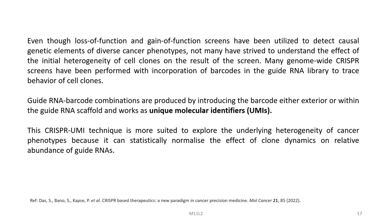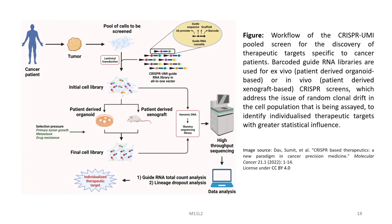Although loss-of-function and gain-of-function screens have been utilized to detect causal genetic elements of diverse cancer phenotypes, not many have studied the effect of initial heterogeneity of cell clones on screen results. Many genome-wide CRISPR schemes incorporate barcodes in the guide RNA library to trace behavior of cell clones. Guide RNA-barcode combinations are produced by introducing the barcode exterior to or within the guide RNA scaffold, working as unique molecular identifiers. The CRISPR-UMI technique can statistically normalize the effect of clone dynamics on relative abundance of guide RNAs.